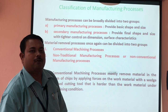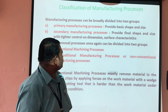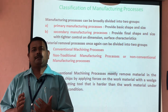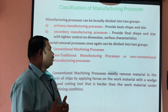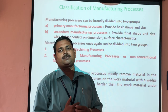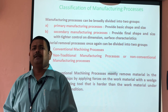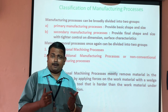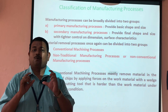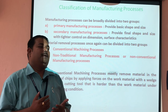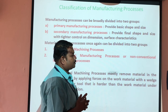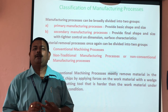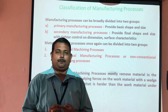Now I have to classify the manufacturing process. Based on different energy domains, conventional machining processes are of various types — for example, the lathe machine, milling machine, and grinding machine. All are related to conventional machining where the energy domain is mechanical energy. Based on this, the manufacturing process is divided into two categories: one is primary manufacturing process and the second is secondary manufacturing process.